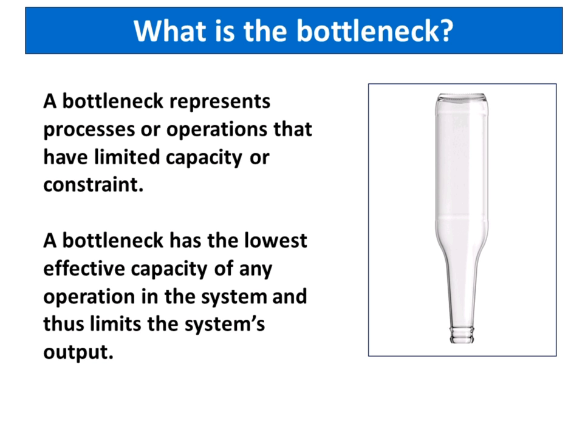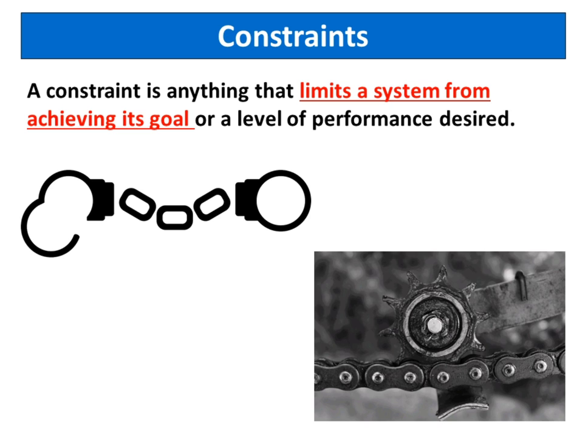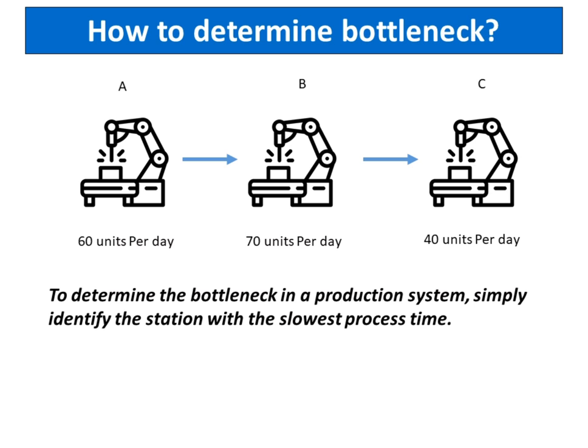What is the bottleneck? A bottleneck represents processes or operations that have limited capacity or constraint. A constraint is anything that limits a system from achieving its goal or a level of performance desired. A bottleneck has the lowest effective capacity of any operation in the system and thus limits the system's output. To determine the bottleneck in a production system, simply identify the station with the slowest process time.